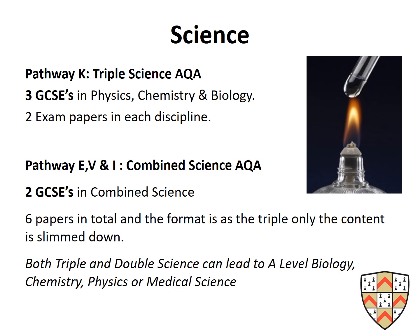Regarding science: there are two pathways. The K pathway students do triple science — 3 separate GCSEs with 2 exam papers in each discipline. The E, V and I pathways do combined science, which is 2 GCSEs, with 6 papers in total; the format is the same as triple but the content is slimmed down. Importantly, both triple and combined science can lead to A-level biology, chemistry, physics or medical science — it's based on the grades achieved, not whether they've done triple or combined.